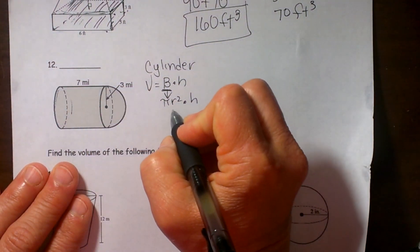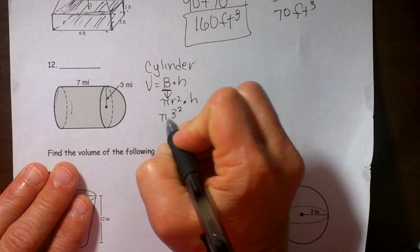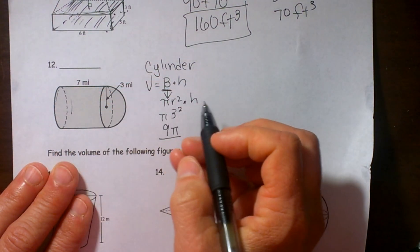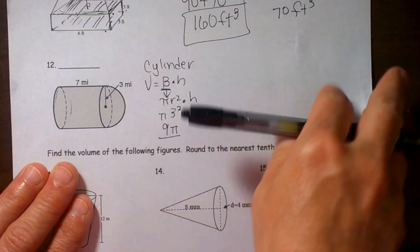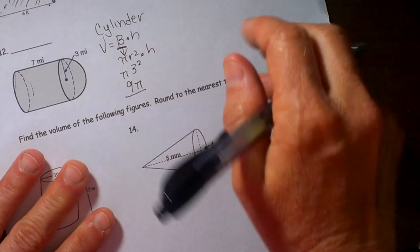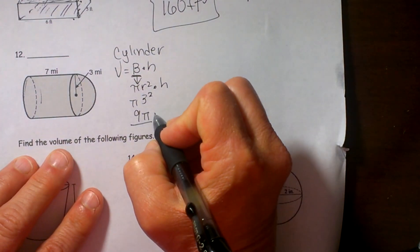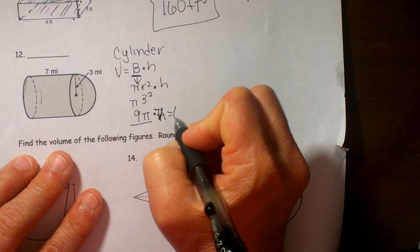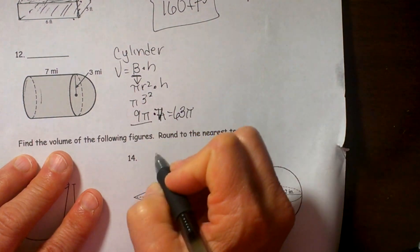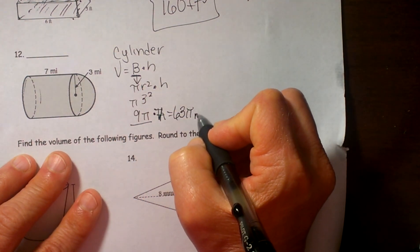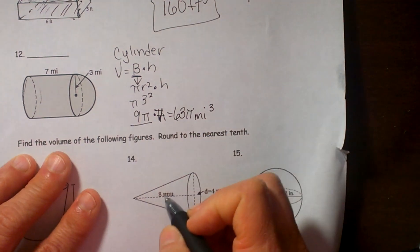The circle has a radius of 3 so let's take 3 squared which is 9 pi. That is my base area. And then what is the height of this? Well again if you need to turn it you can see my height is 7. So that is my 7 and that gives us 63 pi and that gives us the volume of the cylinder and that would be in miles cubed because it is three dimensional.